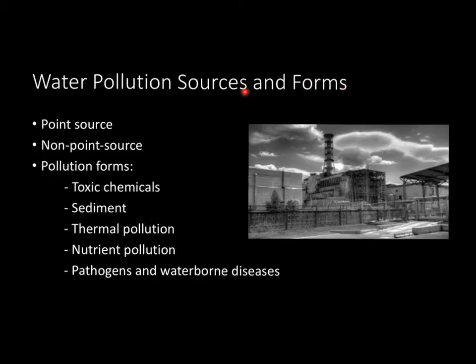This brings us into water pollution sources and forms. There are two main water pollution sources. The first is point source pollution — think of a factory with a smoke tower. Point source pollution comes from a direct location you can pinpoint, such as a factory releasing a measurable amount of emissions. Non-point source pollution is trickier — it's the cumulative multi-source input of pollutants. Think of a city street where cars are polluting, people are dropping trash, and many things are working together, making it hard to pinpoint exactly what's polluting what.